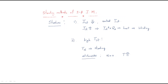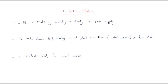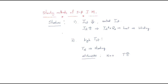These two things — controlling starting current and providing high starting torque — are provided by starters. We have a number of different starters: DOL starter, resistance starting method, inductance starting method, auto transformer starter, and star-delta starter.